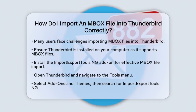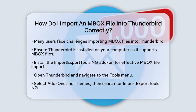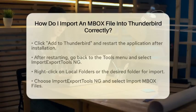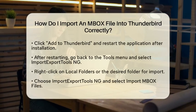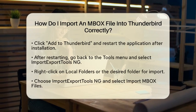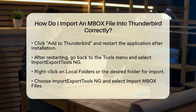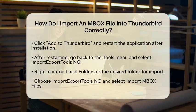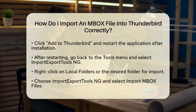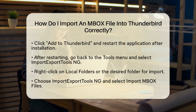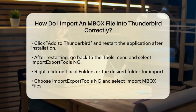To import these files effectively, you will need to install an add-on called Import-Export Tools Inc. To start, open Thunderbird and navigate to the Tools menu. From there, select Add-ons and Themes. In the search bar, type Import-Export Tools Inc. and click on the result that appears. You will see an option to add it to Thunderbird. Click the Add to Thunderbird button, and once it is installed, restart Thunderbird to activate the add-on.